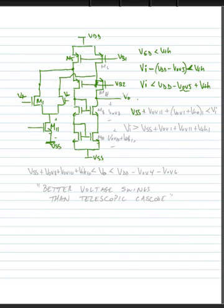So VSS plus VoV11 plus the gate to source of M1, which would be VoV1 plus Vth1, has to be less than the input voltage. In other words, we can say that our input voltage, Vi, has to be greater than VSS plus VoV1 plus VoV11 plus Vth1.